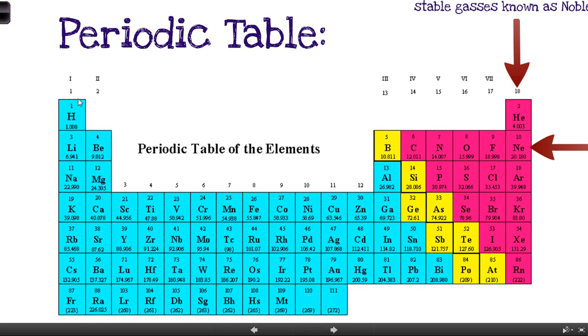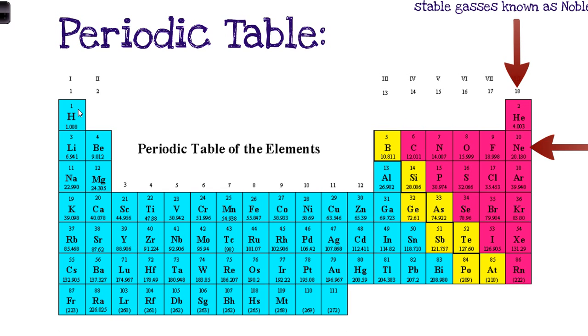Now hydrogen up here is actually an exception. It's on the metal side. It often behaves like a metal in some chemical reactions, but it's really not a metal. If you look at hydrogen, it's a gas. It's not shiny. It doesn't look anything like a metal.